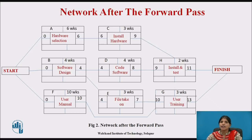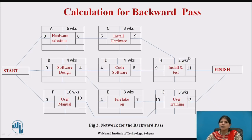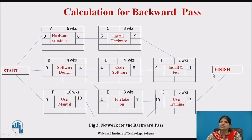Now we see the network after the backward pass and the calculation for it. For project completion, we require 13 weeks. First, write down the latest finish date. Since 13 is the maximum number for project completion, write down 13 as the latest finish date.